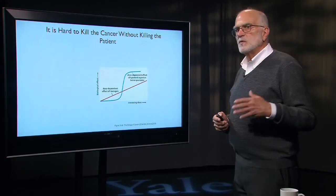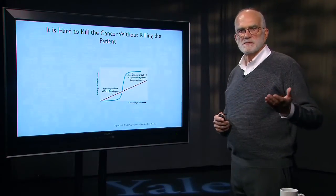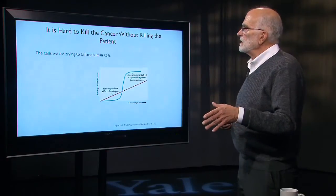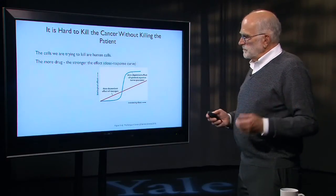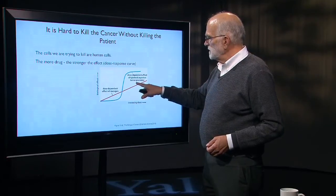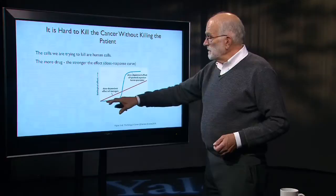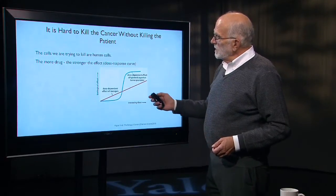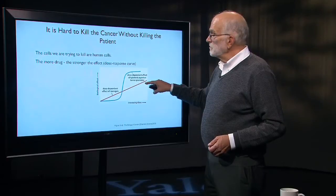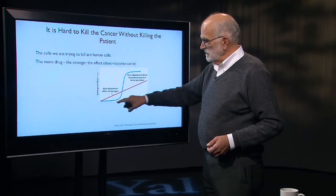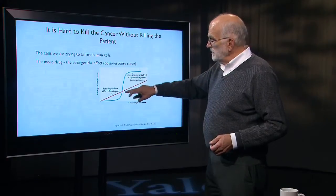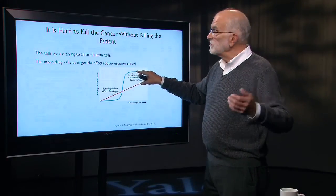Treating cancer is kind of like treating a worm infection — you're dealing with eukaryotic cells, except in this case they are the patient's own cells. So you're trying to kill the cancer without killing the patient. The more drug, the stronger the effect, giving us a dose-response curve. This shows the dose-dependent effect of a cytotoxic agent on the x-axis. Mutagens normally show a linear increase in mutagenic capacity with dose, but a drug often has an ineffective range before a rapid transition to effectiveness — at which point you're worried about killing not just the tumor, but also the patient.